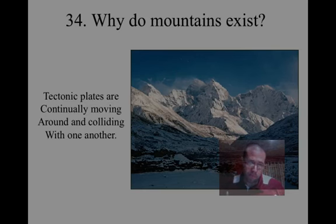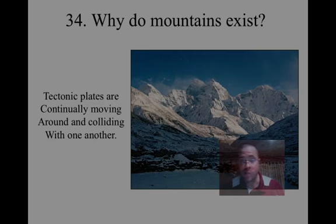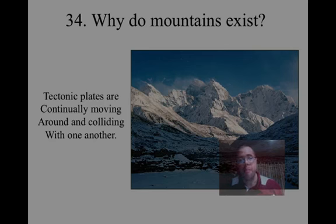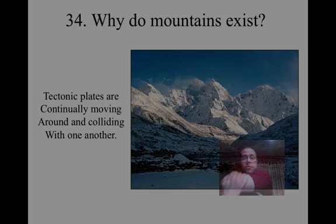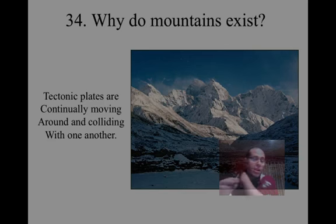Mountains exist because these plates are always moving around and running into each other. We have some mountain ranges in the United States like the Rocky Mountains or the Appalachian Mountains in the eastern portion of the United States — these are from past collisions. They are not currently being built; at this point, they're really just eroding. However, the Himalayas are the best example of our fold mountains because they're actively building — that Indian plate is still crashing into the Asian plate.